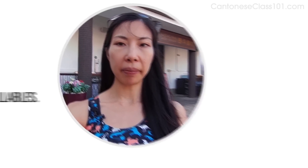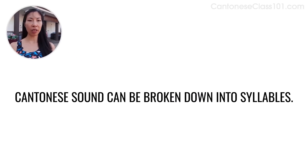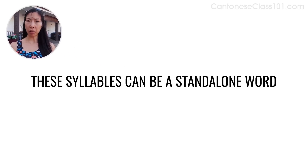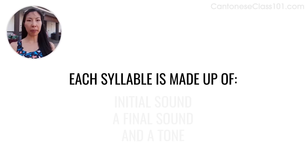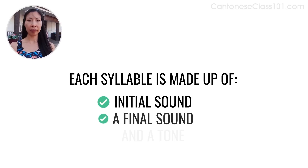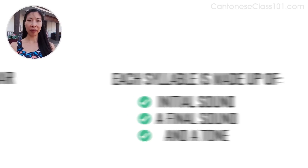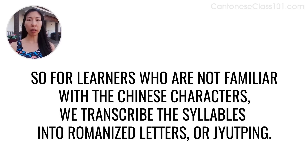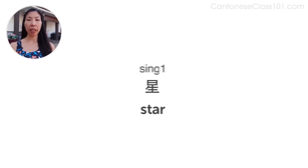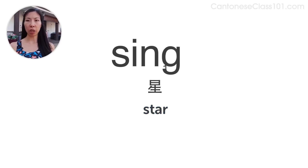How is a word built when written in Jyutping? Cantonese sounds can be broken down into syllables, which can be standalone words or combined to form compound words. Each syllable is made up of an initial sound, a final sound, and a tone. For learners not familiar with Chinese characters, we transcribe the syllables into romanized letters or Jyutping. For example, the syllable sing1 (S-I-N-G-1) means 'star', where the initial sound is S and the final sound is -ng (I-N-G), in the first tone.